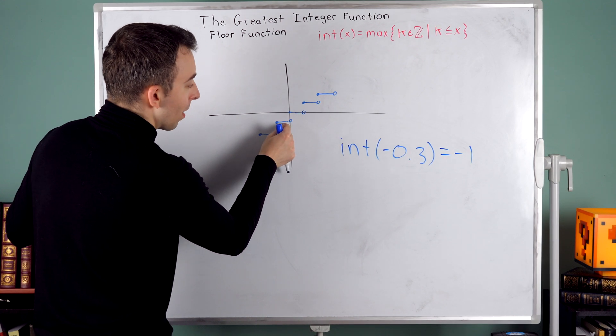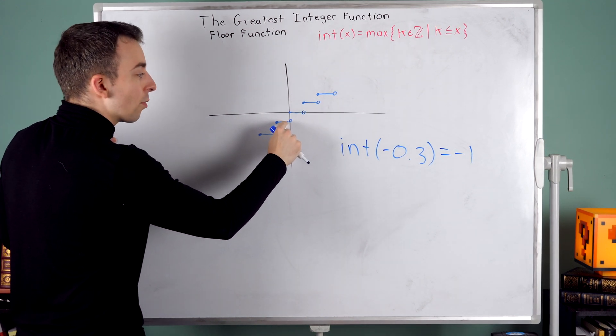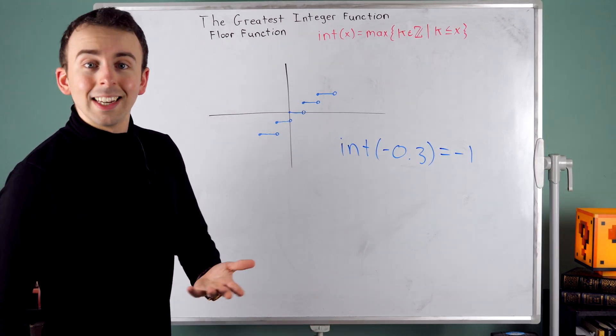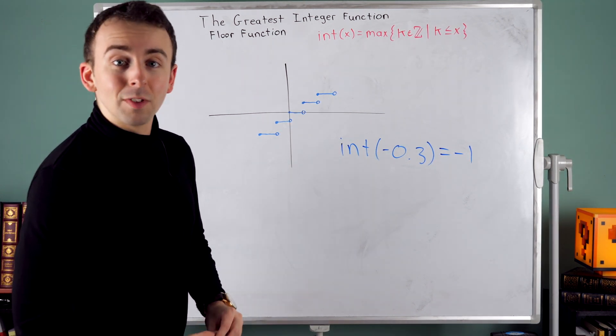You can see that in our graph, negative 0.3 is around here. And you can see the function has a value of what's supposed to be negative one. Hopefully my graph is convincing.